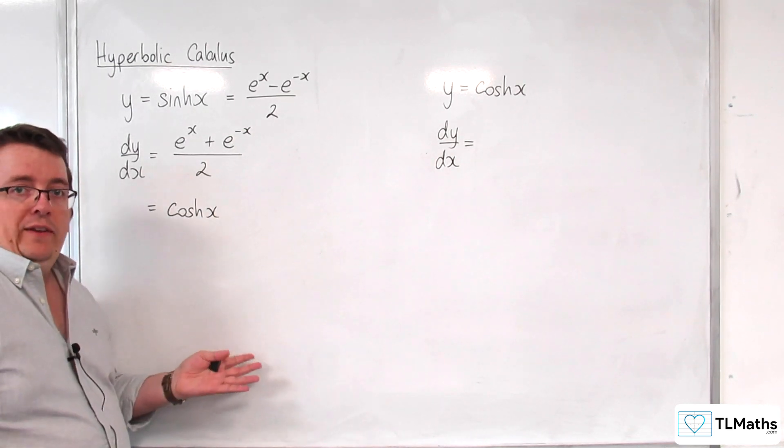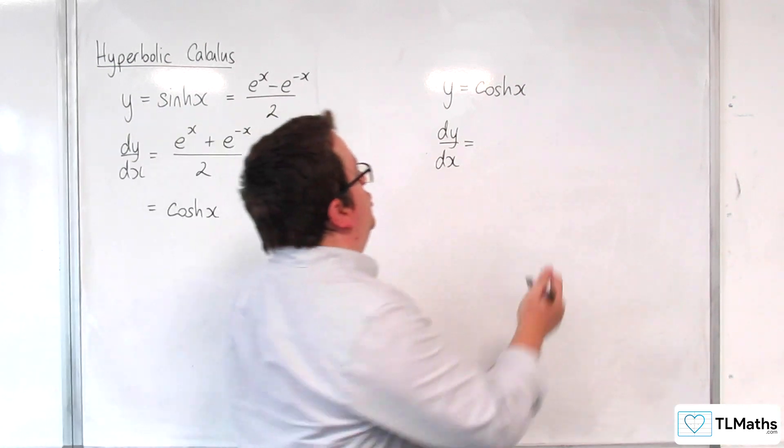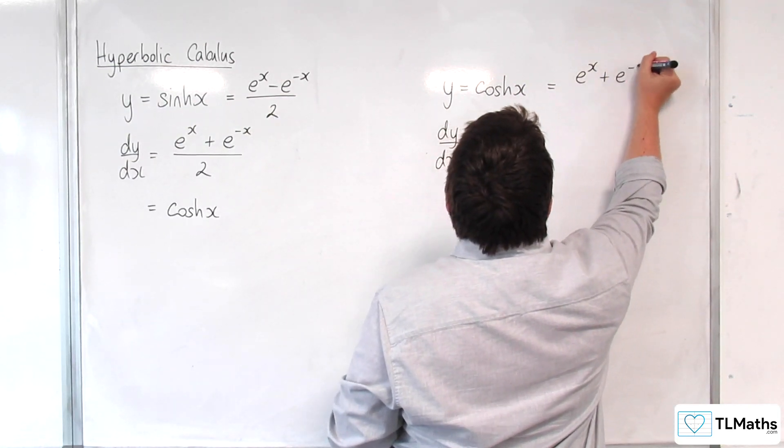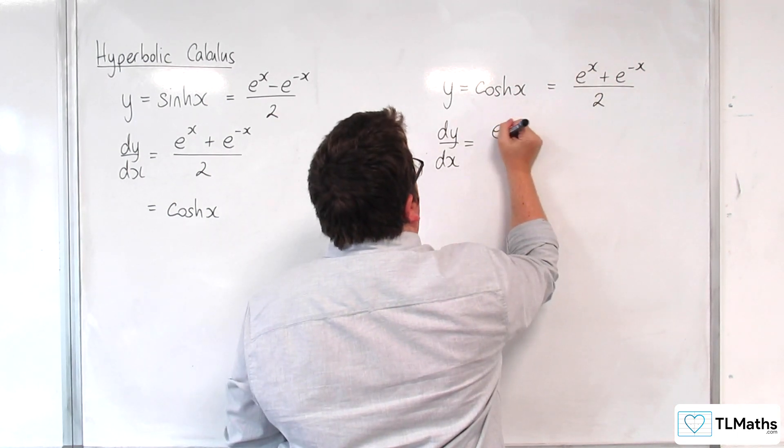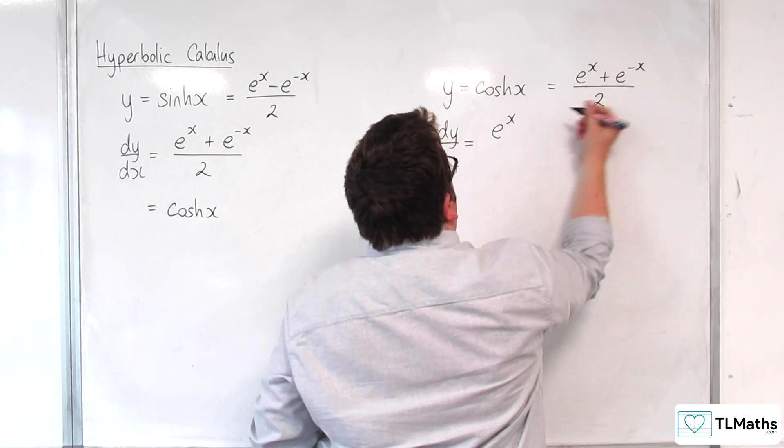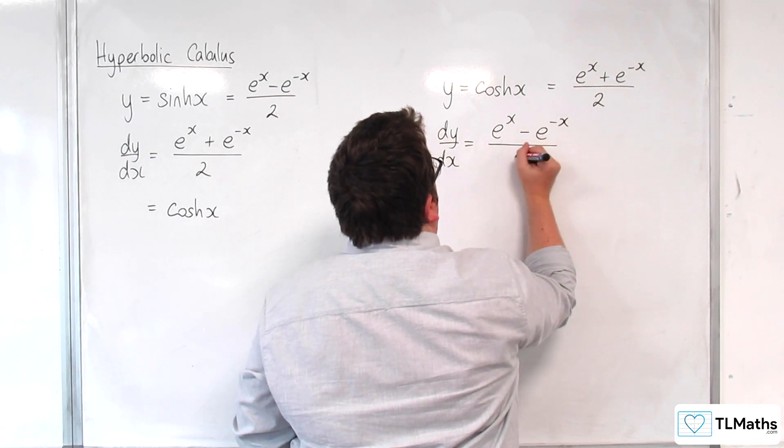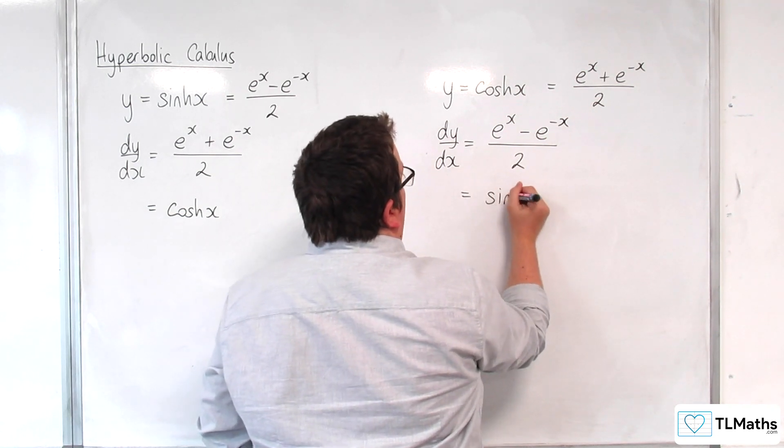Okay well, that's brilliant, that's easy to remember. Now if we do the same with y = cosh x, this is e^x + e^(-x) over 2. And when we differentiate that, e^x differentiates to itself, e^(-x) differentiates to -e^(-x), and that's still going to be over 2. And conveniently, that is sinh x.